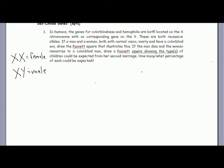So it says colorblindness and hemophilia are both located on the X chromosome with no corresponding gene on the Y. These are both recessive alleles. Let's name our key. Little n is going to equal colorblindness, and big N equals regular color vision.